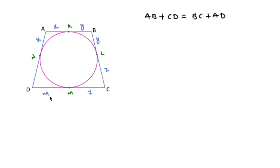Now if we add all sides, in place of AB we can write X plus Y, and in place of CD we can write G plus J.